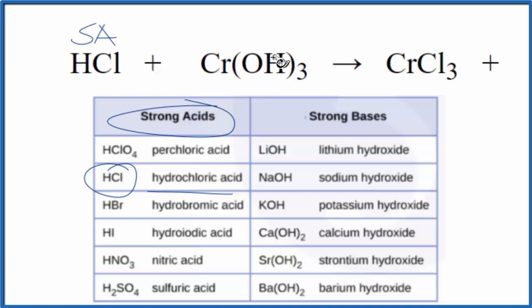Then chromium-3-hydroxide, we know it's a base, we have a metal, and then we have this hydroxide group here. As I look down the list, though, I don't see it. These are the strong bases, it's not there, so it's going to be a weak base.